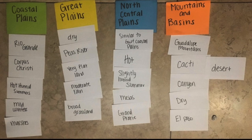As you can see in my examples, I have the four Texas regions. And under the regions, in different colored paper, I have the landforms, the climates, and the vegetation that describes what you would see within these regions.